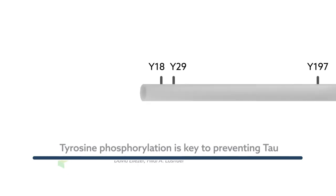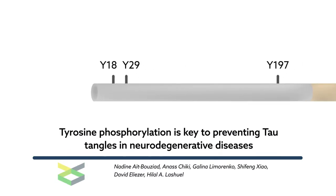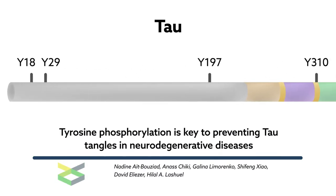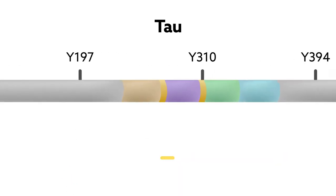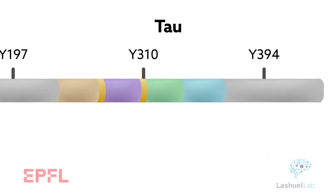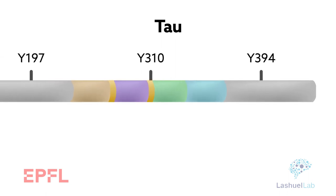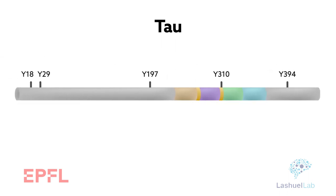Previously overlooked, these tyrosine amino acid residues of the protein tau could play a pivotal role in regulating the functions of this protein in health and disease. Targeting these residues could lead to new forms of therapy that modify the progression of brain disorders.